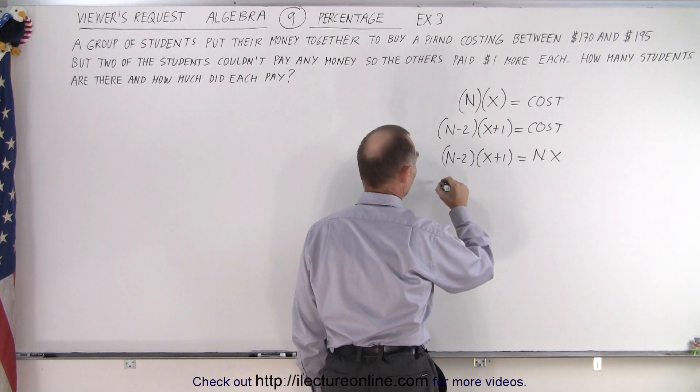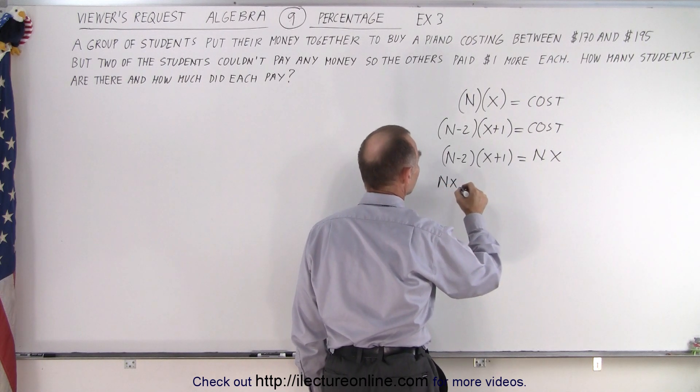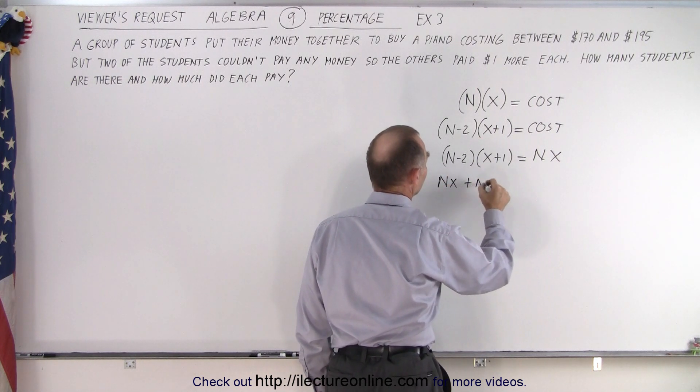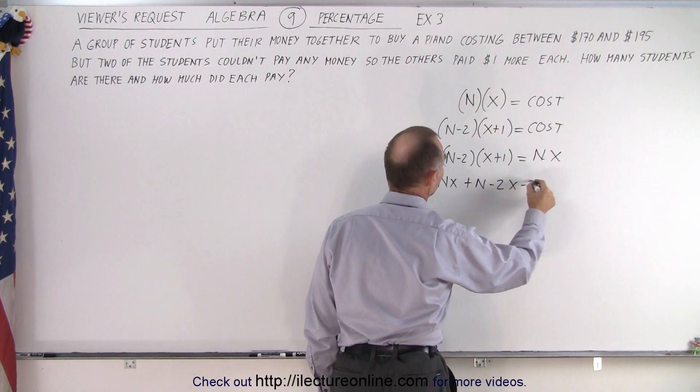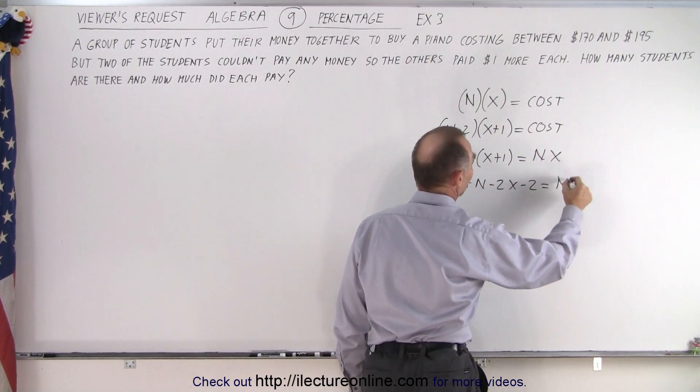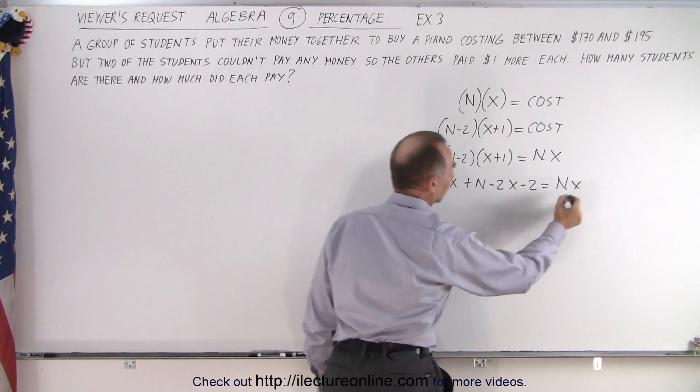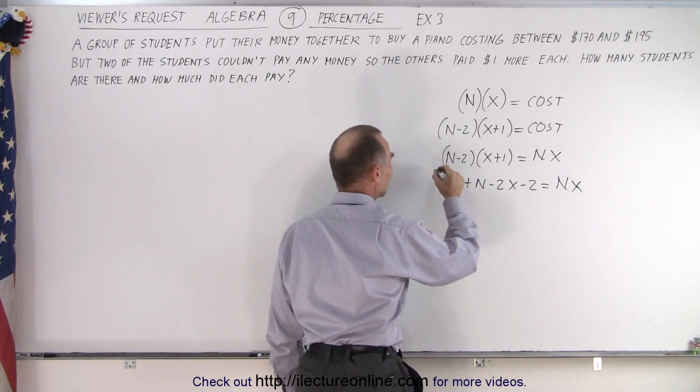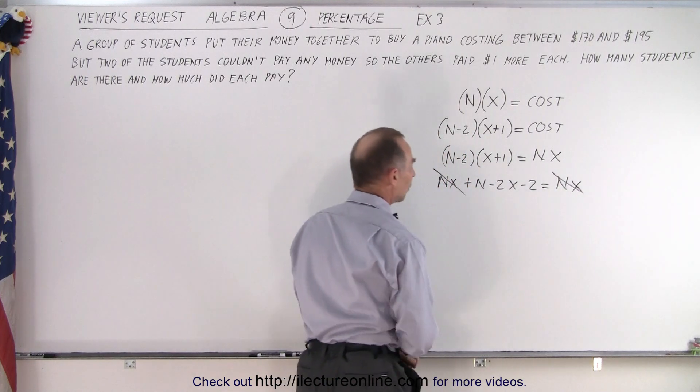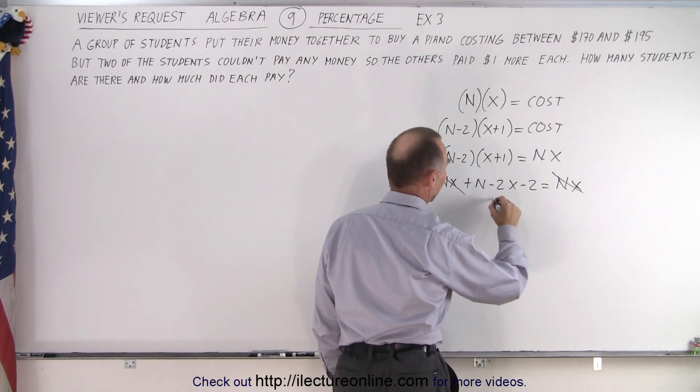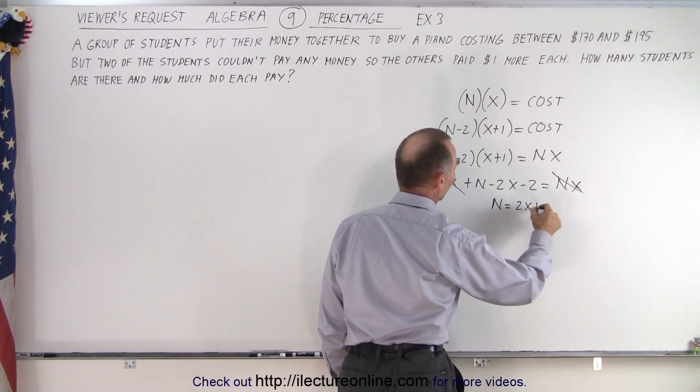Let's multiply out the left side. So we have nx + n - 2x - 2 = nx. And of course we can then eliminate nx on both sides of the equation, which then means that n = 2x + 2.